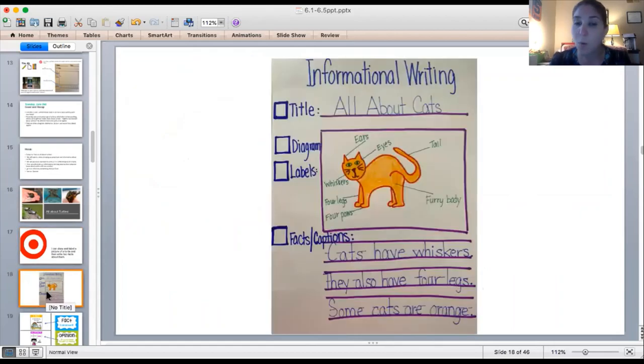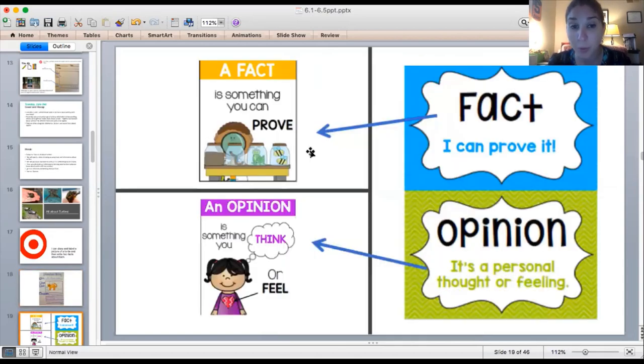Now let's just remember real quick, what are some different things that are going to be on our informational writing piece? Our informational writing piece must have a title, or what the writing piece is all about. Our writing piece must have a diagram or a picture. Our writing piece must have labels. And the last thing it needs is facts. That's what a fact is, is something that you can prove. It's different than opinions. Our opinions is how we think or we feel about a certain topic. We are only talking about the facts.